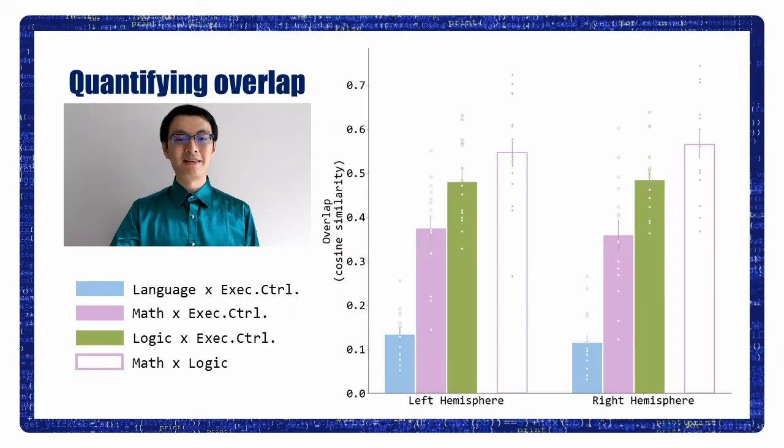We quantified the overlap between the activation patterns using cosine similarity and created this bar graph. Obviously, the neural basis of math and logic greatly overlapped with each other, and both math and logic overlapped considerably with executive control, whereas language, as expected, shared the least activation with the executive control system.